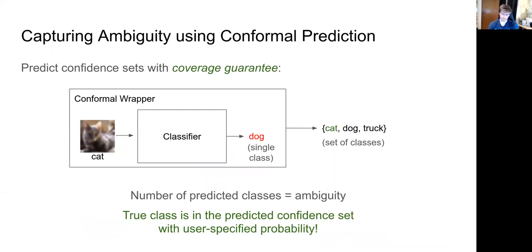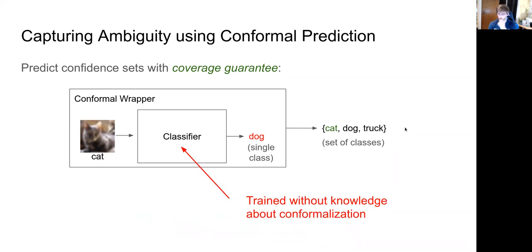We focus exclusively on the classification task, though the principles can apply to regression as well. Conformal prediction acts as a nice statistical wrapper around a classifier that occasionally makes mistakes — for example, misclassifying a cat as a dog. It captures ambiguity in a set prediction, ideally including the true class to achieve coverage. The nice thing is we typically have some sort of coverage guarantee, even if only marginal.